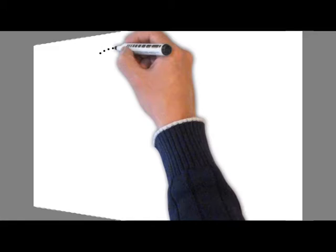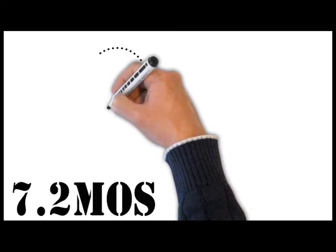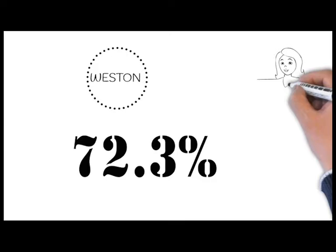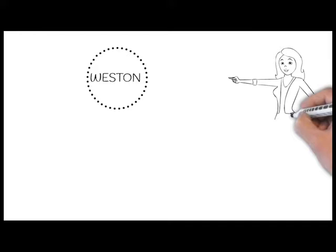What about Weston? We currently have 7.2 months of supply, where 6 to 9 months is a balanced market. This month last year, there was only 3.6 months of supply, an increase of 72.3%. Even with rising inventories, Weston is barely in the balanced market strata.